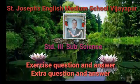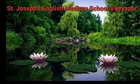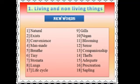Now children, I will start the reading. The first question is new words. First one: natural. Second: exist. Third one: convenience. Convenience means a useful or helpful thing.